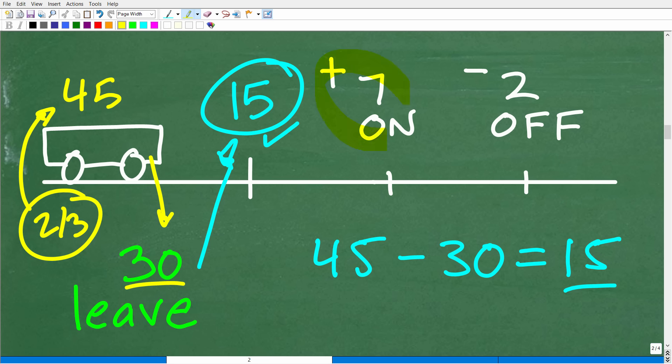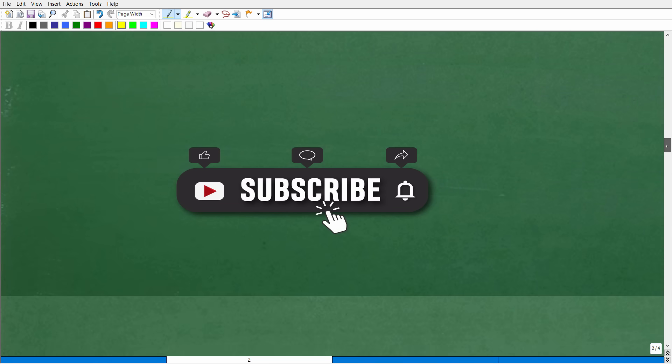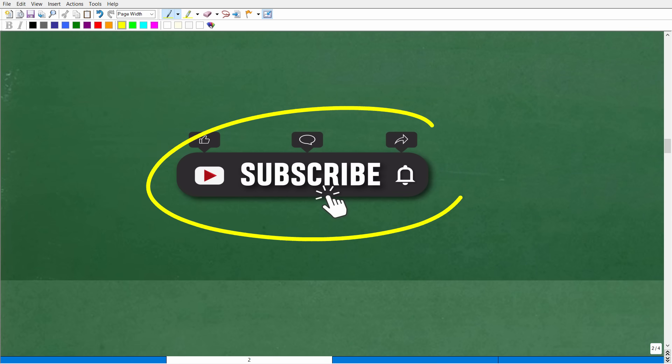Now, what's going to happen next? Well, seven people are going to get on. And then after that, two people are going to leave the bus. Then we're going to figure out how many people remain. And hopefully you see that this is going to be a very easy problem to finish. And let's go ahead and do that now. But before we do that, I'm going to ask you, if you could, to subscribe to my YouTube channel.